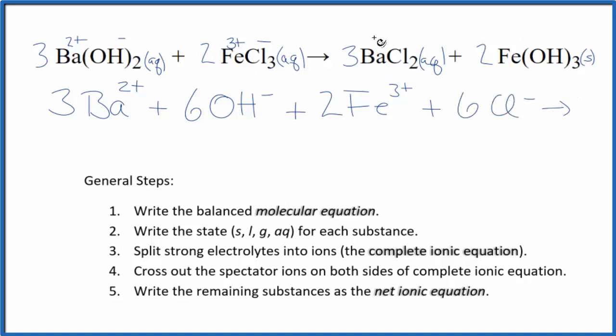For the products, we have barium group two, 2+, chloride 1-. So I have three of the barium ions, plus three times two, six chloride ions. And then with net ionic equations, we don't split solids apart. So we're just going to write Fe(OH)3 for our iron three hydroxide.